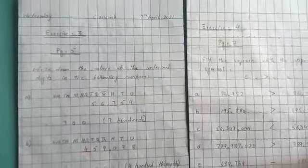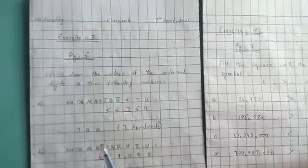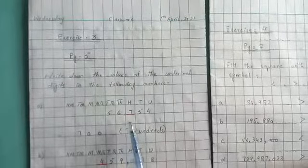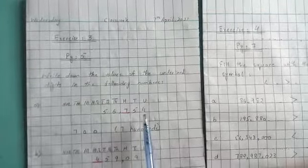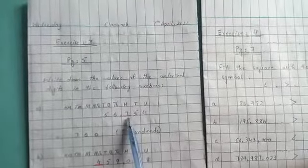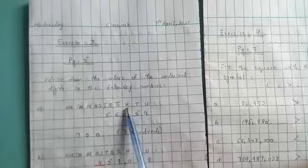Here the number is 56,754. The underlined digit is 7 and its place value is 100, so the answer is 700. Also write in words: seven hundred.